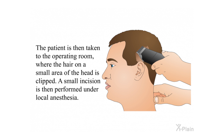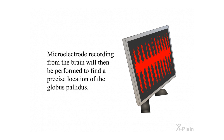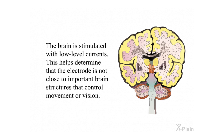The patient is then taken to the operating room, where the hair on a small area of the head is clipped and a small incision is performed under local anesthesia. A hole in the skull is drilled, and a special needle called an electrode is moved to the globus pallidus using data from the computer. This is a very precise operation. Microelectrode recording from the brain is then performed to find the precise location of the globus pallidus. The brain is stimulated with low-level currents to ensure the electrode is not close to important brain structures that control movement or vision.